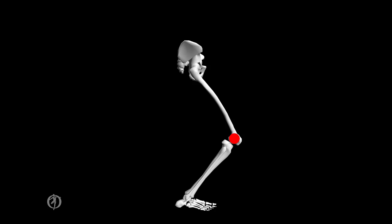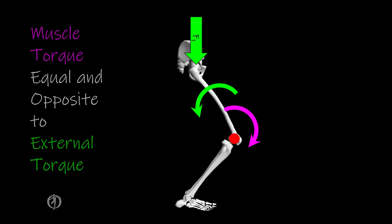Now let's talk about torque that occurs about the joints of the body. We can apply an external force to one of the segments in the system — in this case, it's going to be the proximal end of the femur. If we're talking about rotations that occur about the knee joint, we will see that this external force will create an external torque in the counterclockwise direction. Therefore, we are going to need a muscle torque in the clockwise direction in order to counter this external torque, and the muscle torque has to be equal and opposite to the external torque.